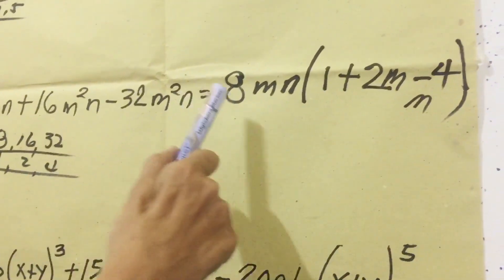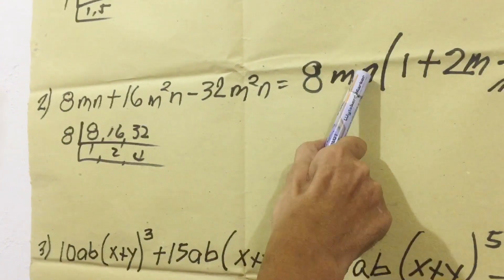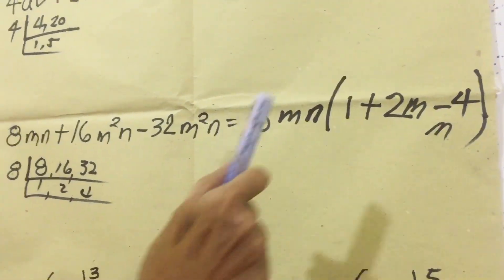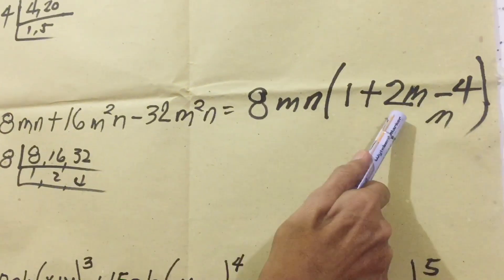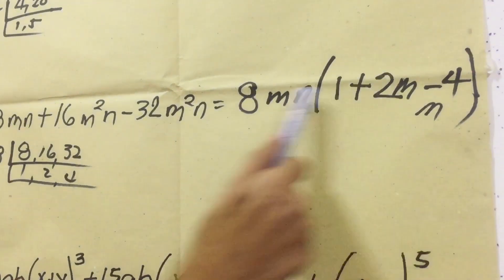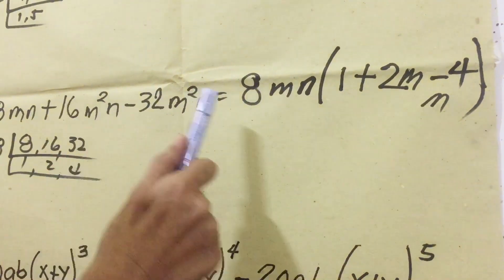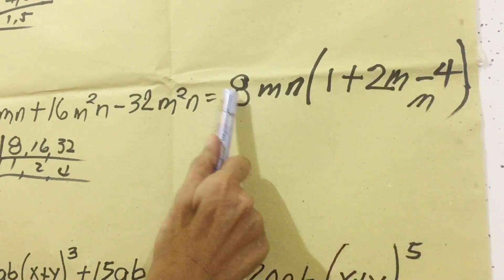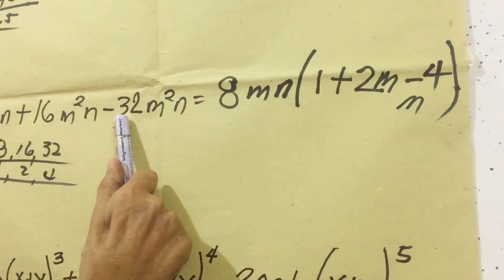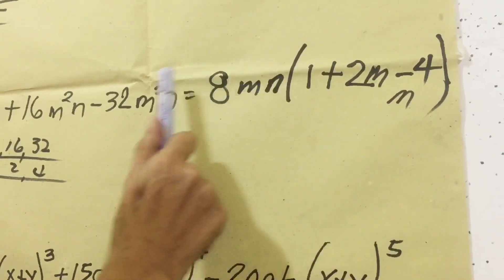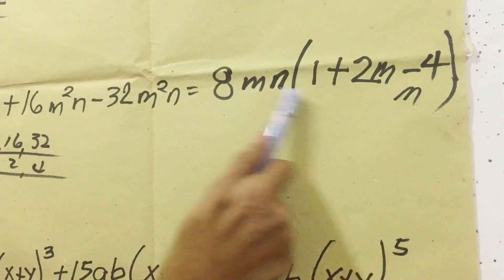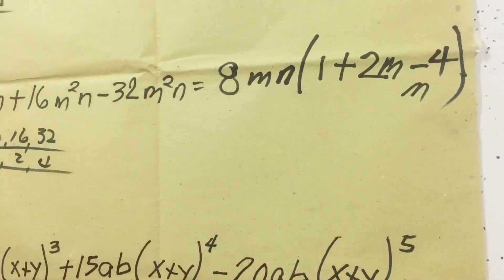Let's check. 8MN times 1 equals 8MN — correct. 2 times 8 is 16, M squared N — correct. 4 times 8 is 32, negative, M squared — correct. And the N terms cancel correctly. So the answer is correct.